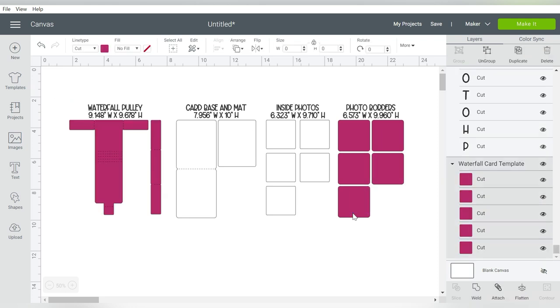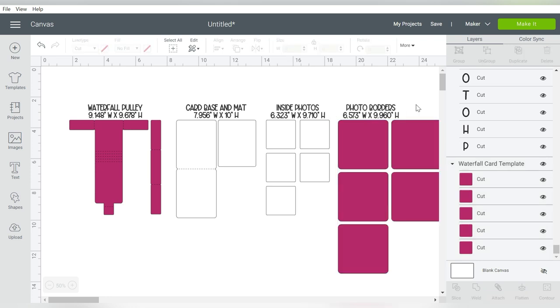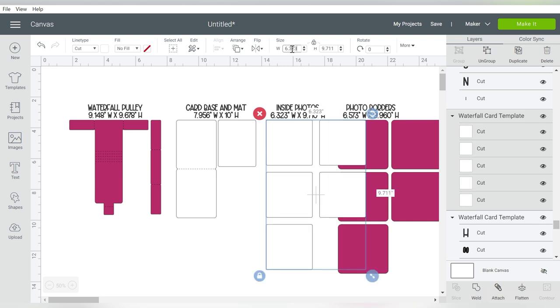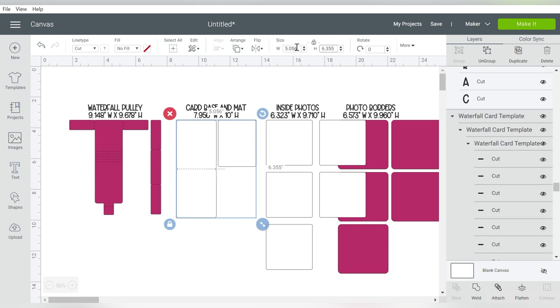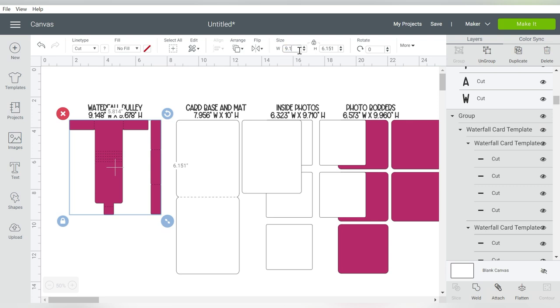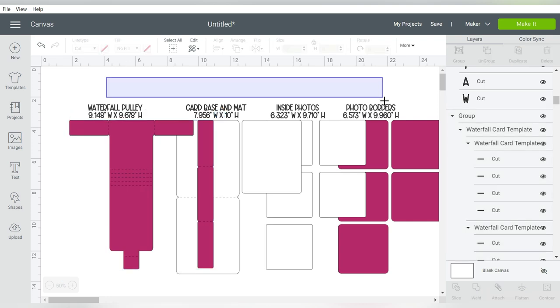So for example, let's try this out. So this says 6.573 inches wide. Does that give me 9.96? Well, it gives me 9.961. So that is really close. So I'm going to keep inputting these measurements. 6.323, and that was 9.710. And 7.956 by 10. And this one is 9.148 and 9.678. So once I get all of those sized, I can delete these. I don't need those anymore.